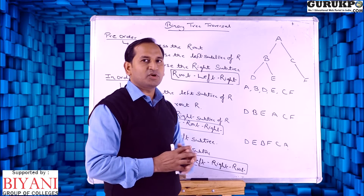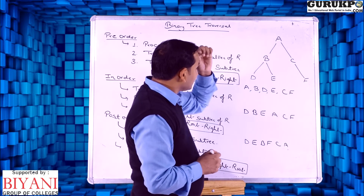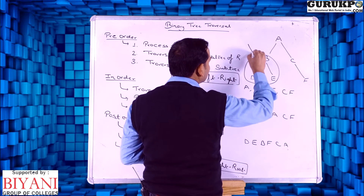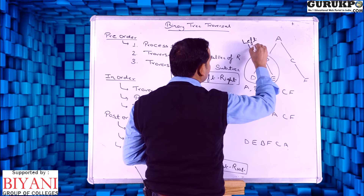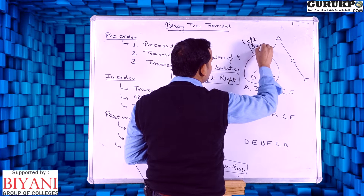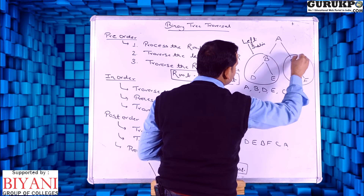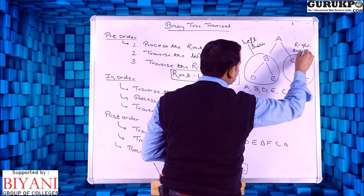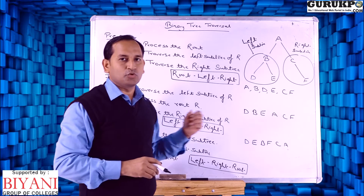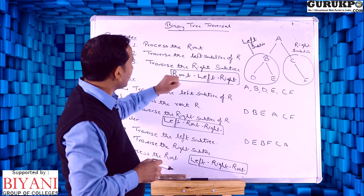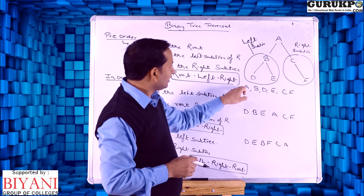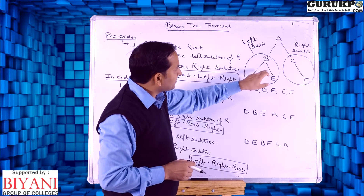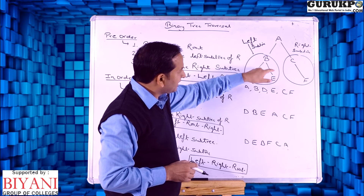Here we are taking a simple example of tree traversal. We have a simple tree — this is the left subtree and this one is the right subtree. In this case, A is the root node. In case of pre-order, first we traverse the root — here A is the root — then we process the left subtree. The left subtree is B, so then we traverse B.